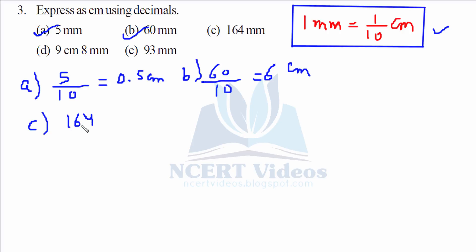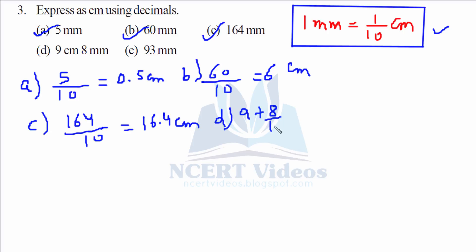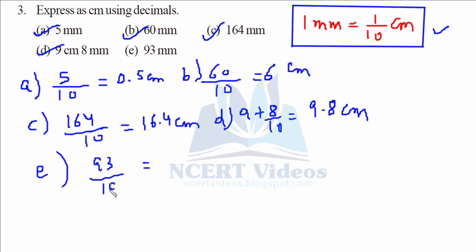Writing units respectively, part b gives 6 centimeters. For part c it is 16.4 centimeters — just place the decimals correctly and your answers will follow. For part d, 9 centimeters and 8 mm: converting 8 mm into centimeters gives you 9.8 centimeters. For part e, 93 over 10 is nothing but 9.3 centimeters. That completes question number three.